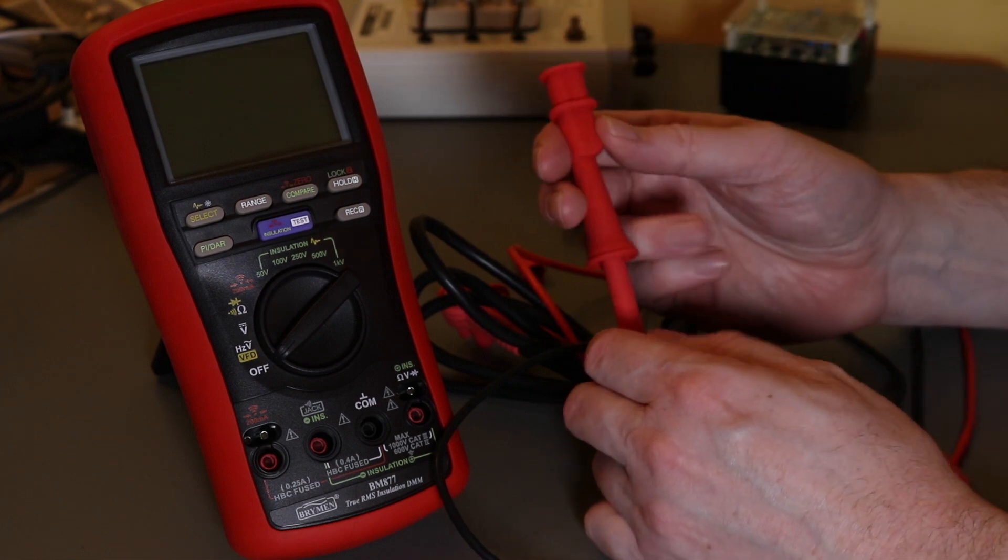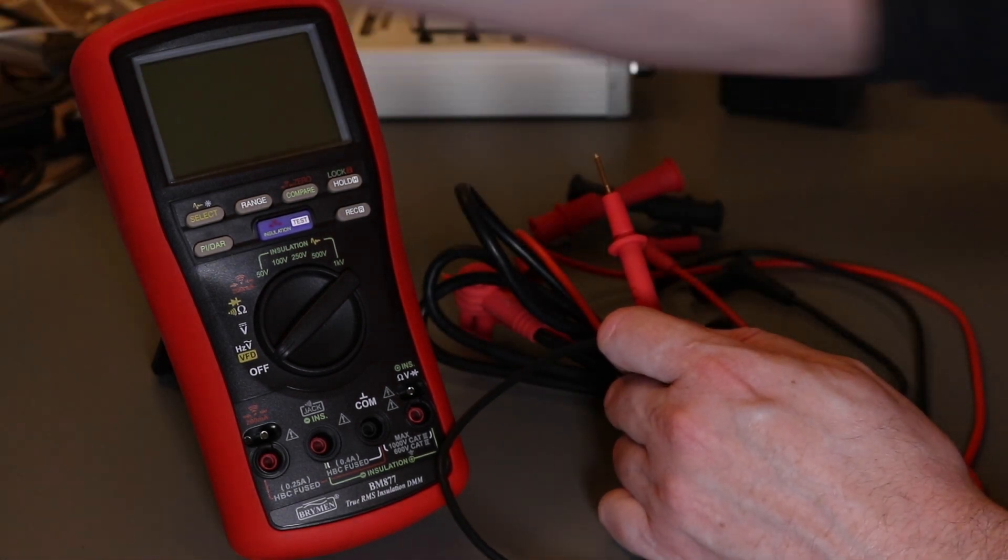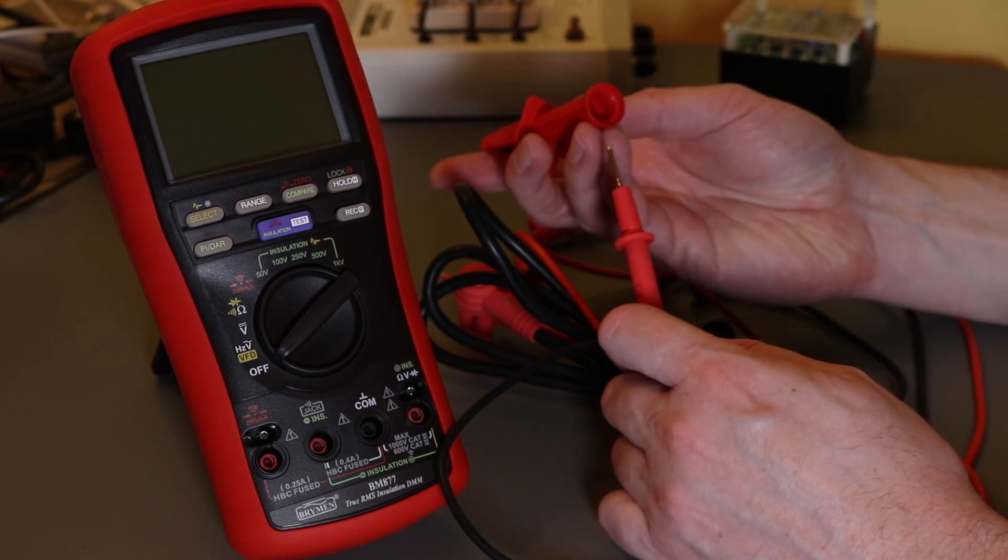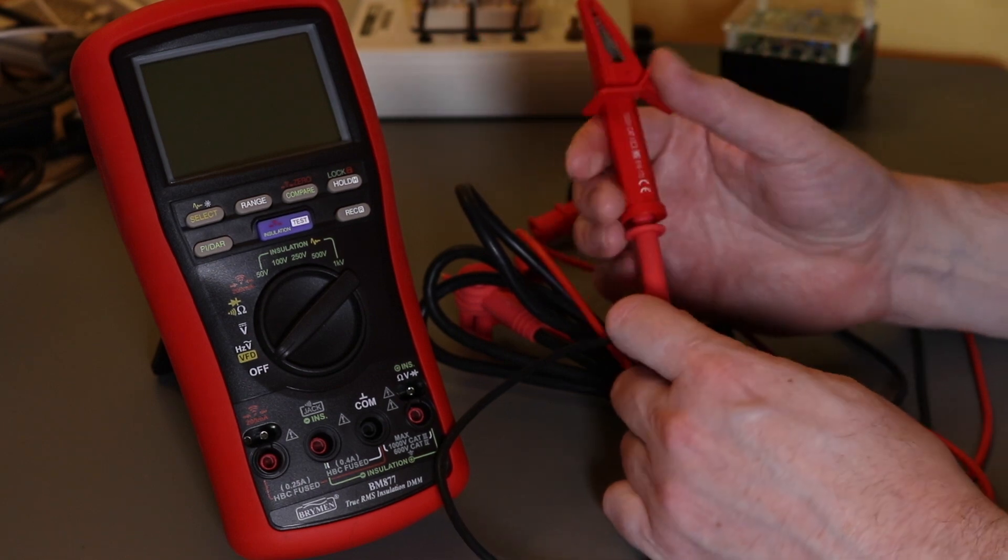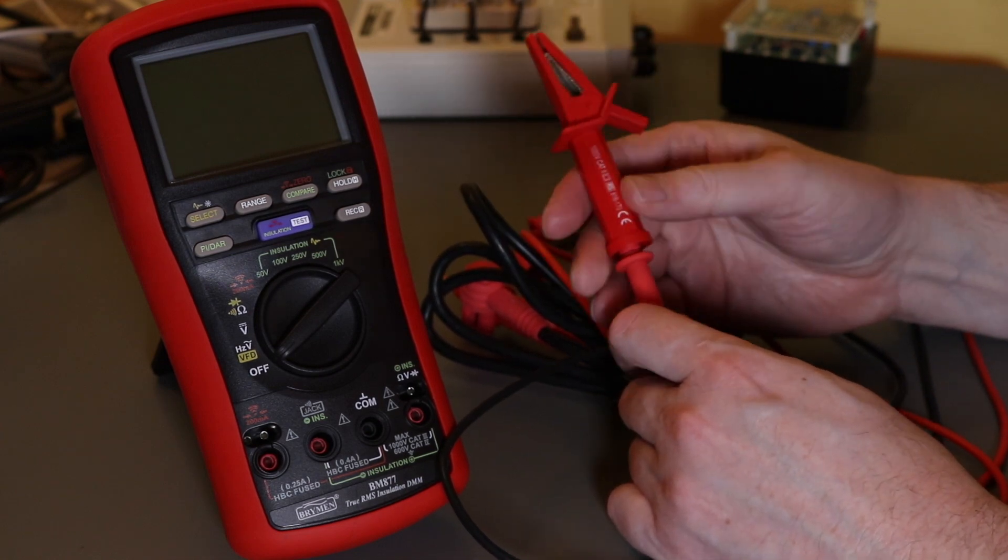But what you can get from there as well, these are standard RS probe croc clips, and they do fit and will work. And then you've obviously got a lot more jaw opening on these should you require it.